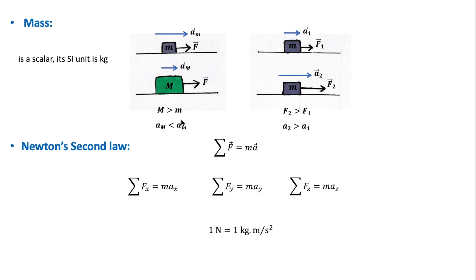So this shows that the acceleration of an object is inversely proportional to its mass. And now suppose that the same mass is subject to two different forces. So if F2 is larger than F1, then the acceleration A2 is larger than A1. So this shows that the magnitude of the acceleration is directly proportional to the magnitude of the applied force, and its direction is in the direction of that force.